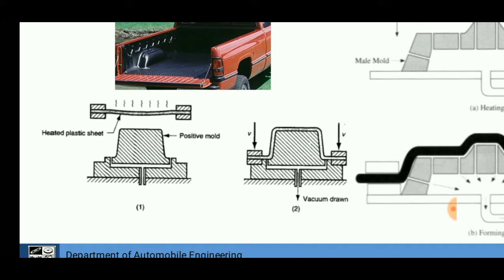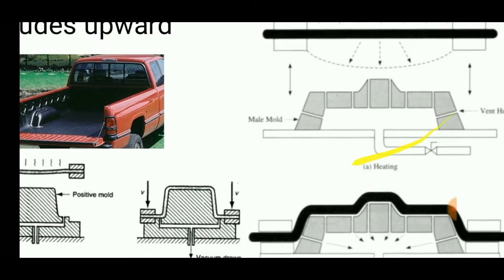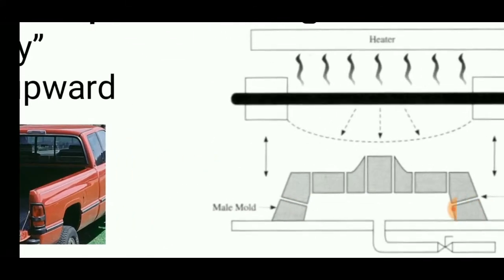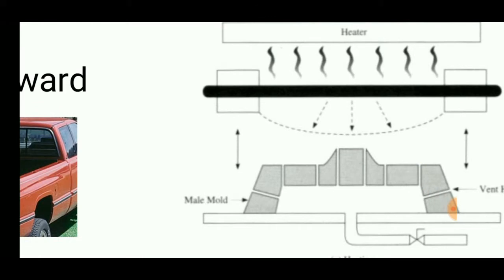By using a heater, it becomes soft in nature. A mold that is placed under the plastic sheet is combined with a vacuum port. When the plastic sheet is made to move down, it takes the shape of the male mold.